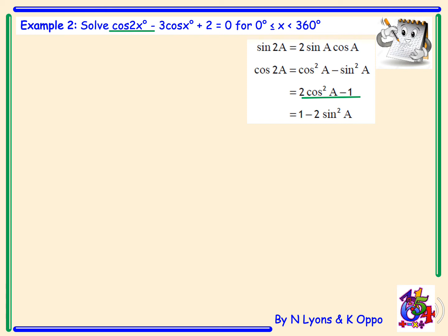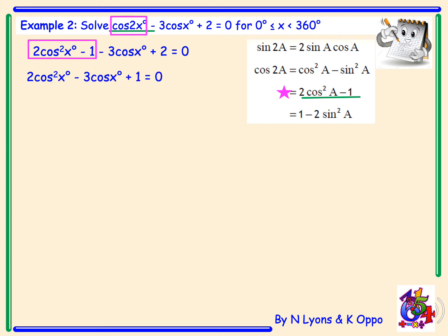Replacing cos2x with 2cos²x - 1 gives us 2cos²x - 1 - 3cosx + 2 = 0. Combining numerical terms, 2 - 1 = 1, giving 2cos²x - 3cosx + 1 = 0. This is a quadratic expression which factorizes to (2cosx - 1)(cosx - 1) = 0.